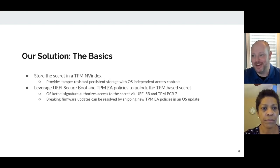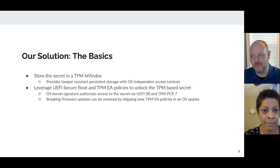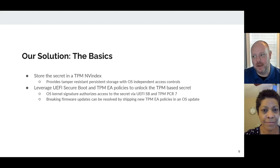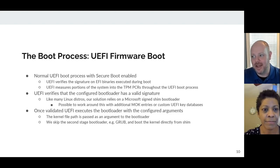Here's our solution. We're storing our secret in the TPM NV Index, and we're going to leverage UEFI Secure Boot and TPM EA policies to unlock that secret. We rely on the kernel signature as well as the UEFI Secure Boot measurements into PCR 7 and the EA policies to unlock the secret. And if we have a breaking update — either through the OS or firmware — we resolve that by shipping a new EA policy in an OS update. Joy is going to go into more detail on the implementation and show a demo.